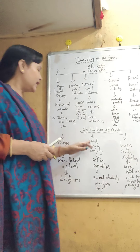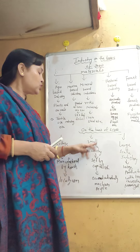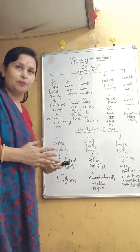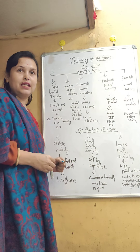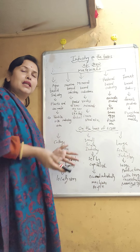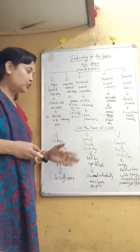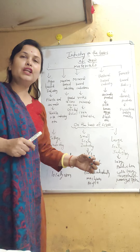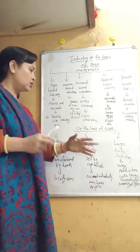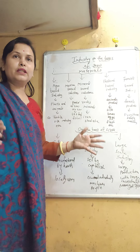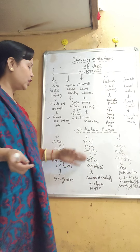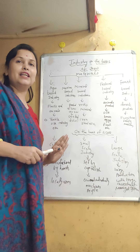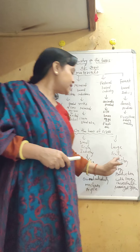Another type of industry based on size is small scale industry. In small scale industry, the capital investment is less than 1 crore. It does not require a large area, and the investment remains under 1 crore, so this is called small scale industry.